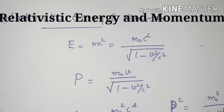We have derived the famous equation of mass-energy conversion, which was derived by Einstein. This equation is E is equal to mc square.